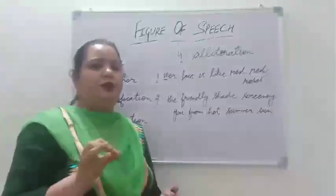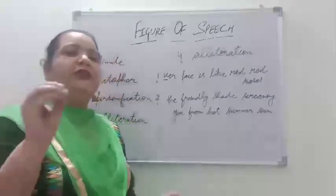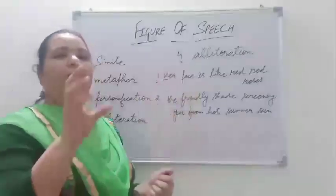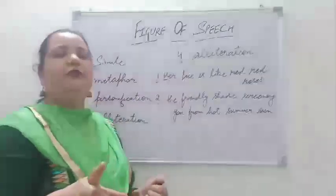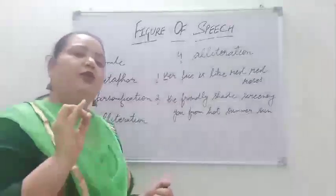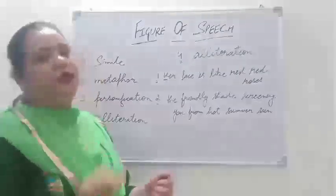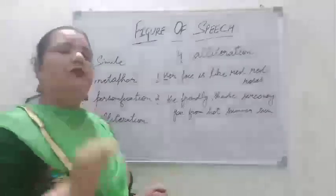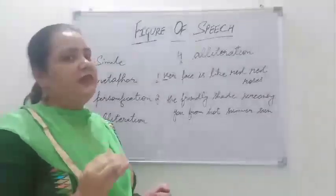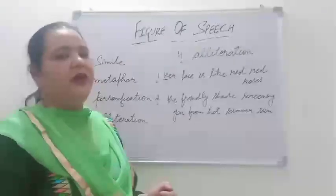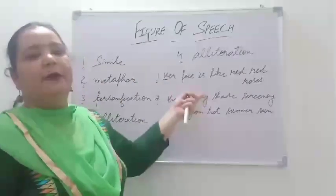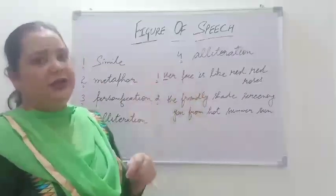In the English alphabet, you must know vowels: A, E, I, O, U. When a word starts with a consonant — not a vowel — and that consonant sound is repeated, then it is an example of alliteration.